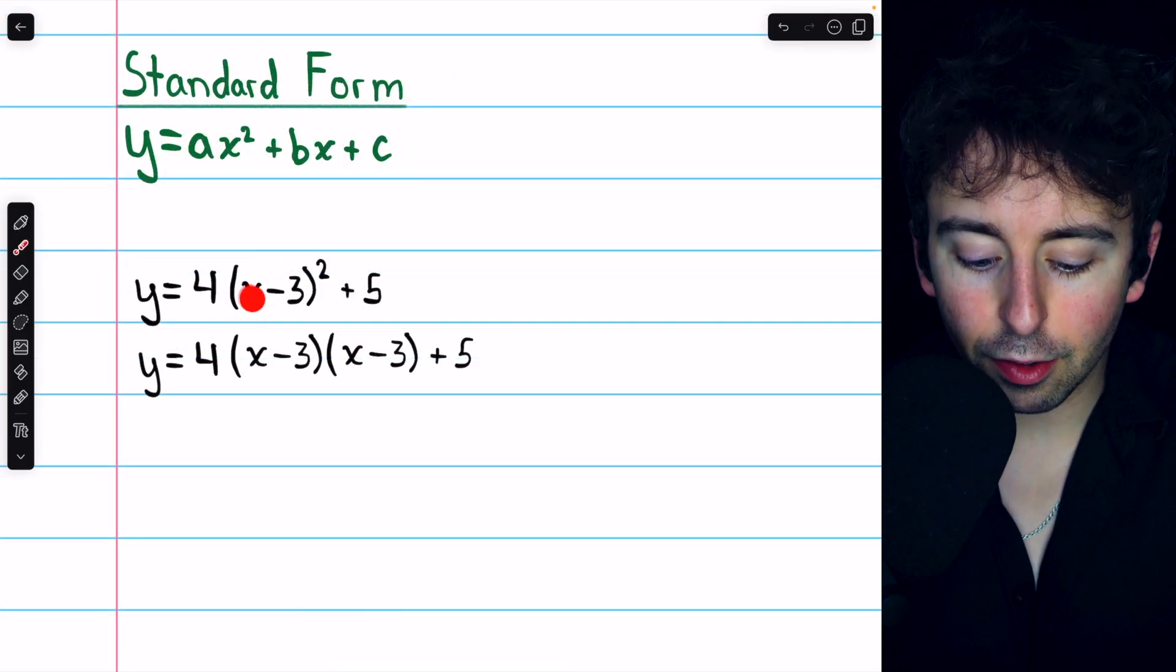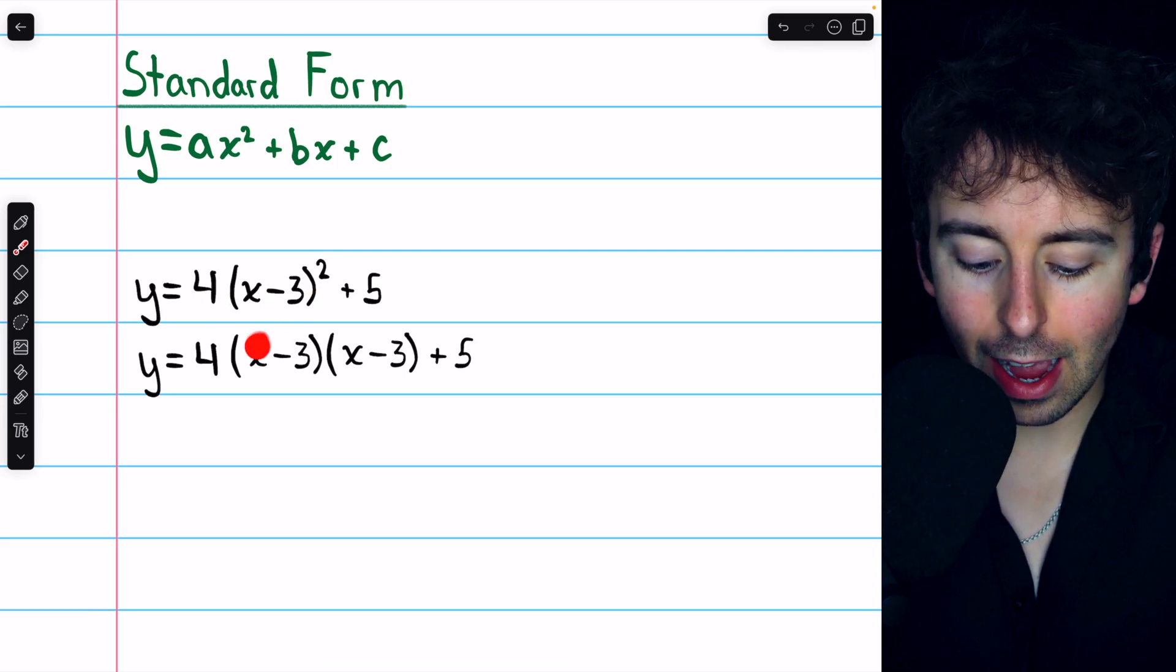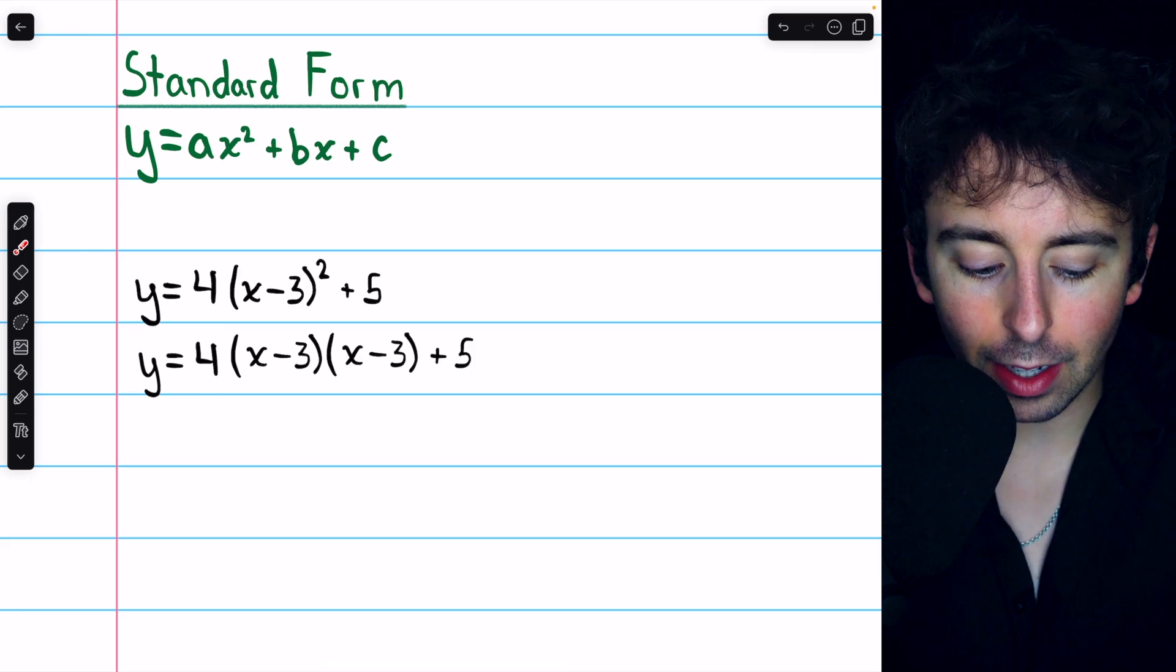So this x minus 3 squared in the vertex form, that's the same as x minus 3 times x minus 3.